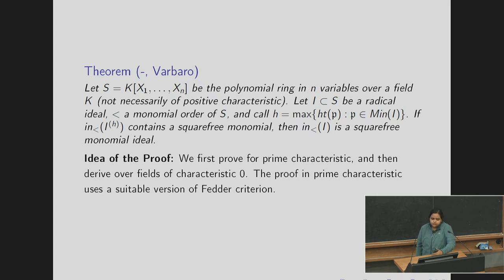So this is the new class. We obtain that S be a polynomial ring in n variables over a field K not necessarily prime characteristic. Let I be a radical ideal and let h be the maximum of the height of all minimal primes. If in(I), I symbolic power h contains a square free monomial then in(I) is a square free monomial ideal. And the proof is actually long. The idea is we first prove it for prime characteristic then derive it for characteristic 0. And then the prime characteristic proof relies on a version of Fedder's criteria.